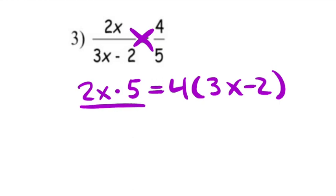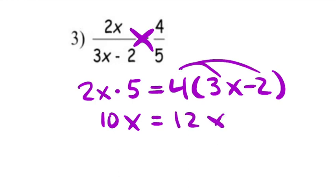So 2x and 5, they make 10x. And when we distribute the 4, we get 12x minus 8.